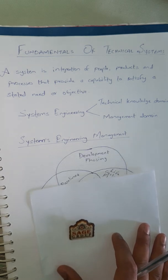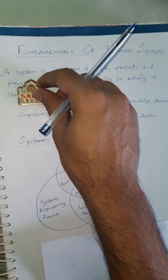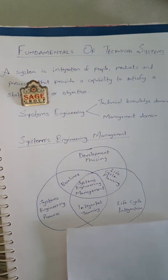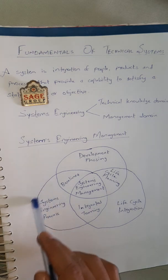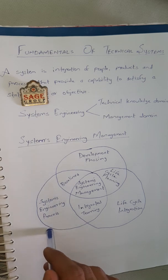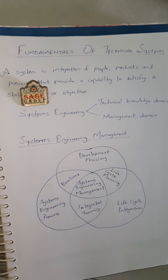Systems engineering management can be well understood by this Venn diagram. The first part is development phasing, which controls the design processes and provides baselines that coordinate the design efforts. The second one is systems engineering processes, which provides a structure for solving design problems and tracking requirements flow through the design effort. The third one is lifecycle integration, which involves customers in the design process and ensures that the developed system is viable throughout its life.